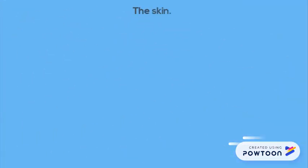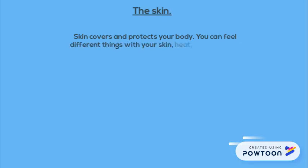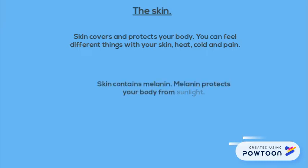Another part of your body is the skin. Skin covers and protects your body. You can feel different things with your skin, for example heat, cold and pain. Skin contains melanin. Melanin protects your body from sunlight.